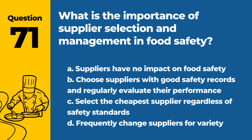Question 71. What is the importance of supplier selection and management in food safety? A. Suppliers have no impact on food safety. B. Choose suppliers with good safety records and regularly evaluate their performance. C. Select the cheapest supplier regardless of safety standards. D. Frequently change suppliers for variety. Answer: B. Selecting and managing suppliers with strong safety records is crucial to ensure the safety of the food received.